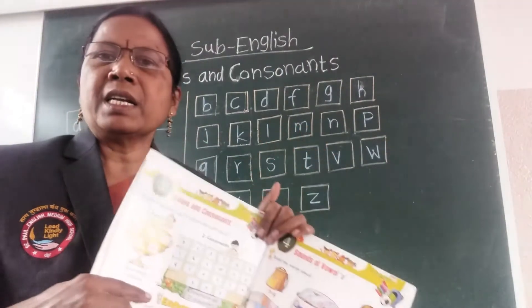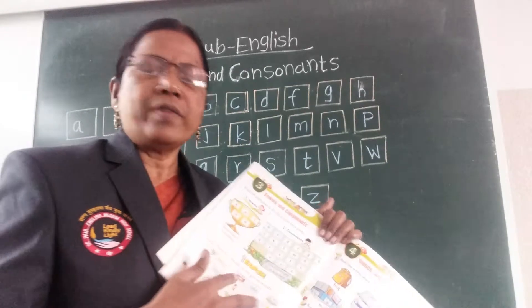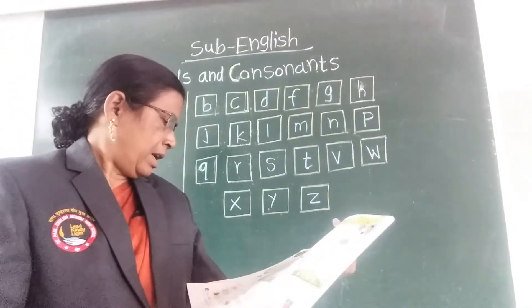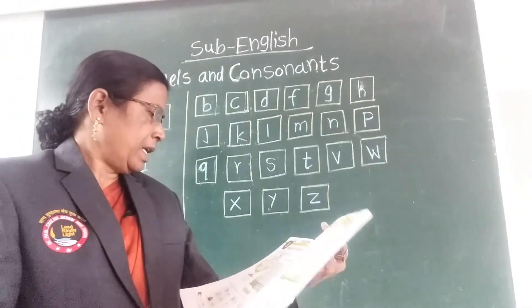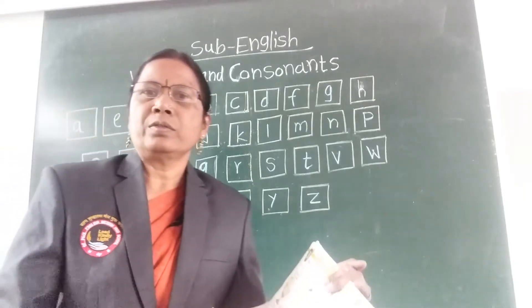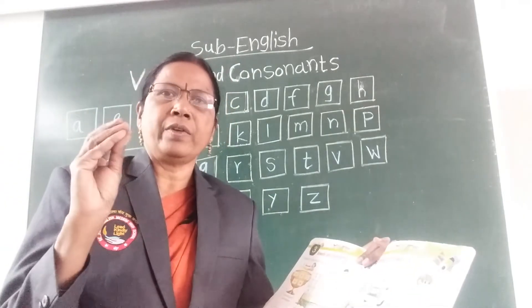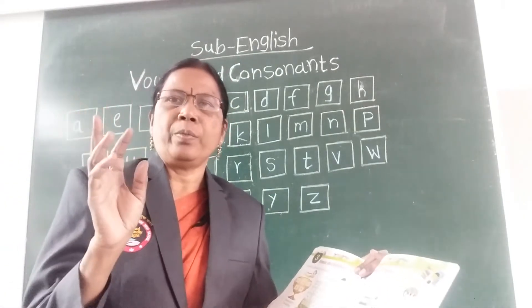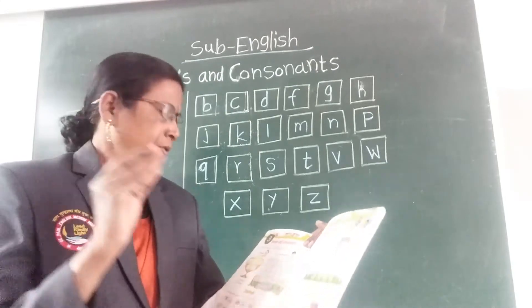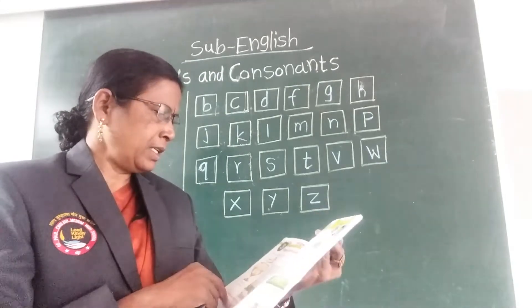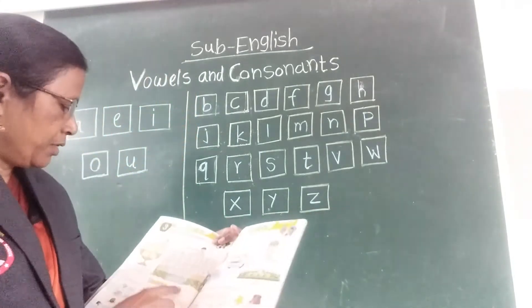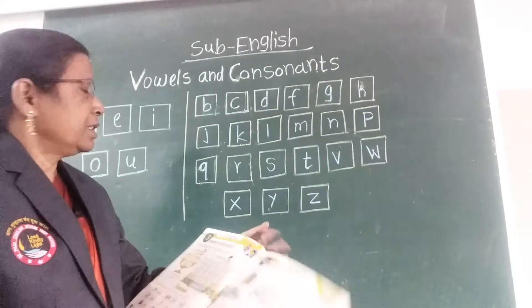How many vowels are there? Vowels are five. And how many consonants? Twenty-one.